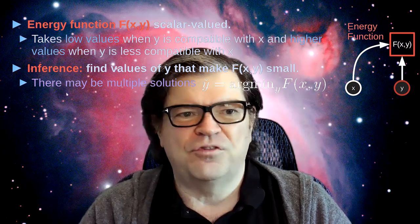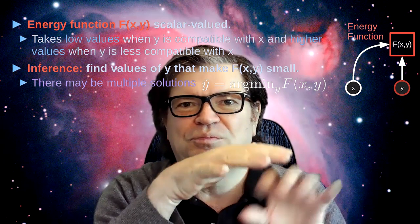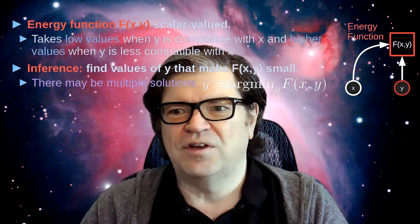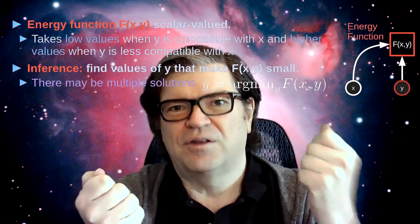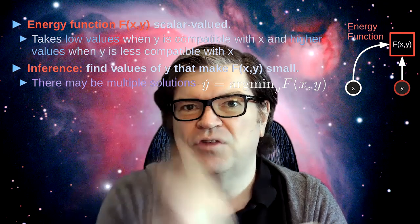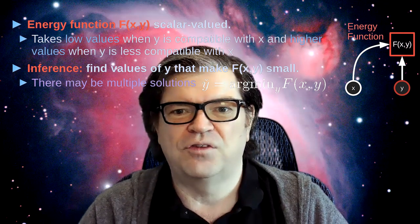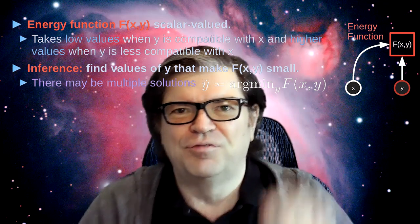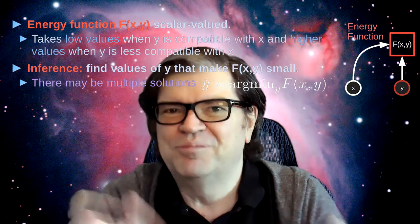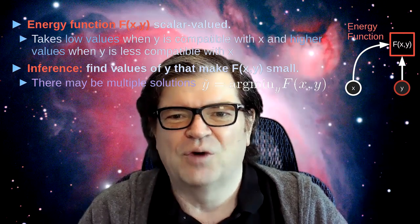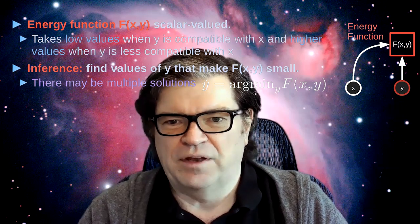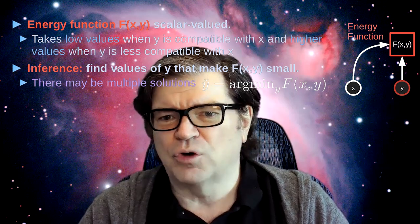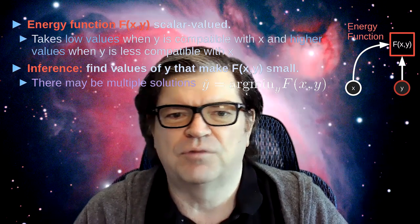So what is inference? Inference there is not just taking x and running it through a neural net and getting an output. It basically consists in trying to find a value of y, given a value of x, that minimizes the energy. This is the formula: y-check equals the argmin over y of f of x, y. Inference involves an optimization with respect to one of the variables we're interested in predicting.